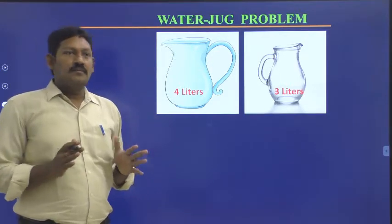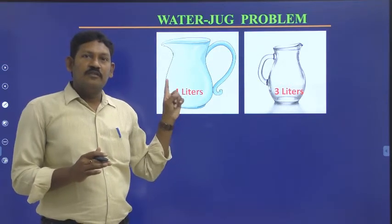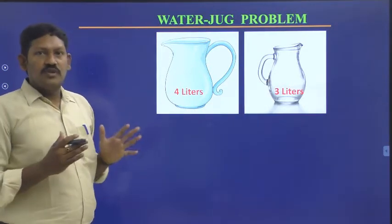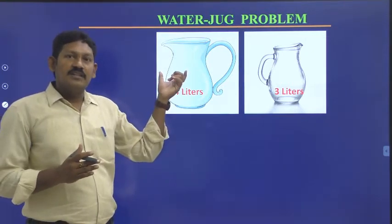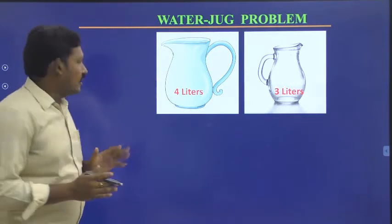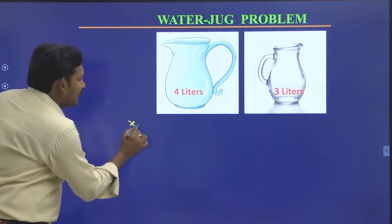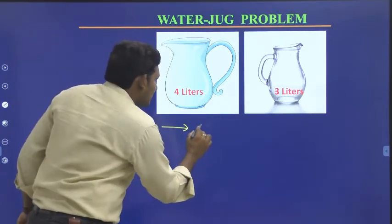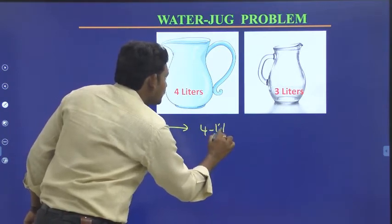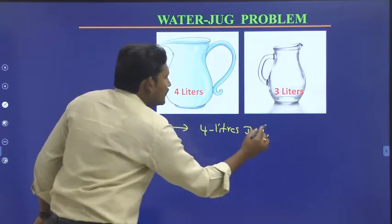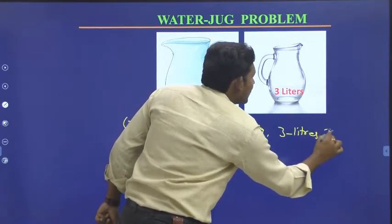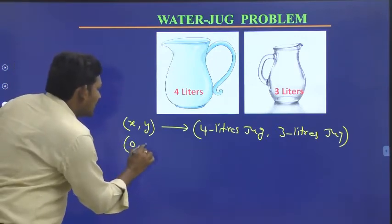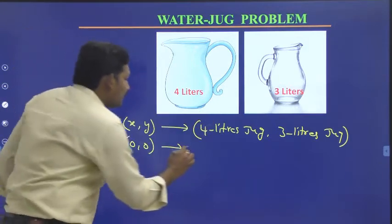So what is the constraint? We are given two jugs: one capable of storing four liters and another capable of storing three liters. By using these two jugs, we have to maintain exactly two liters of water in the four liter jug. There are no markings. We assume x and y, where x represents the four liter jug and y represents the three liter jug. Initially, both jugs are empty.